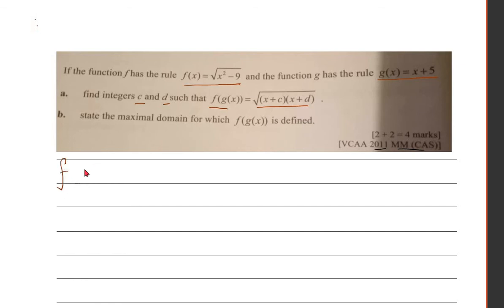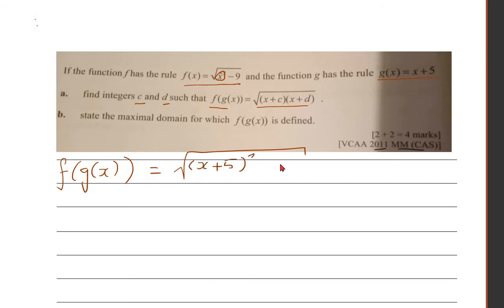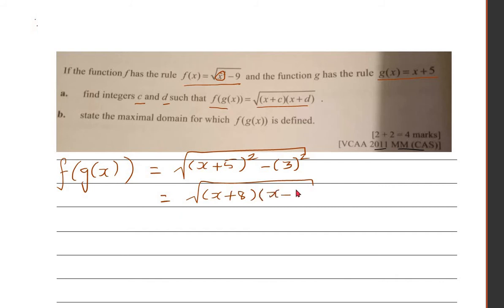So for f of g(x), we substitute g(x) into f. That gives us the square root of (x+1) squared minus 9. We can write minus 9 as minus 3 squared, and then use the difference of two squares, which gives us (x+1+3)(x+1-3), which simplifies to (x+4)(x-2). That's your f of g(x).